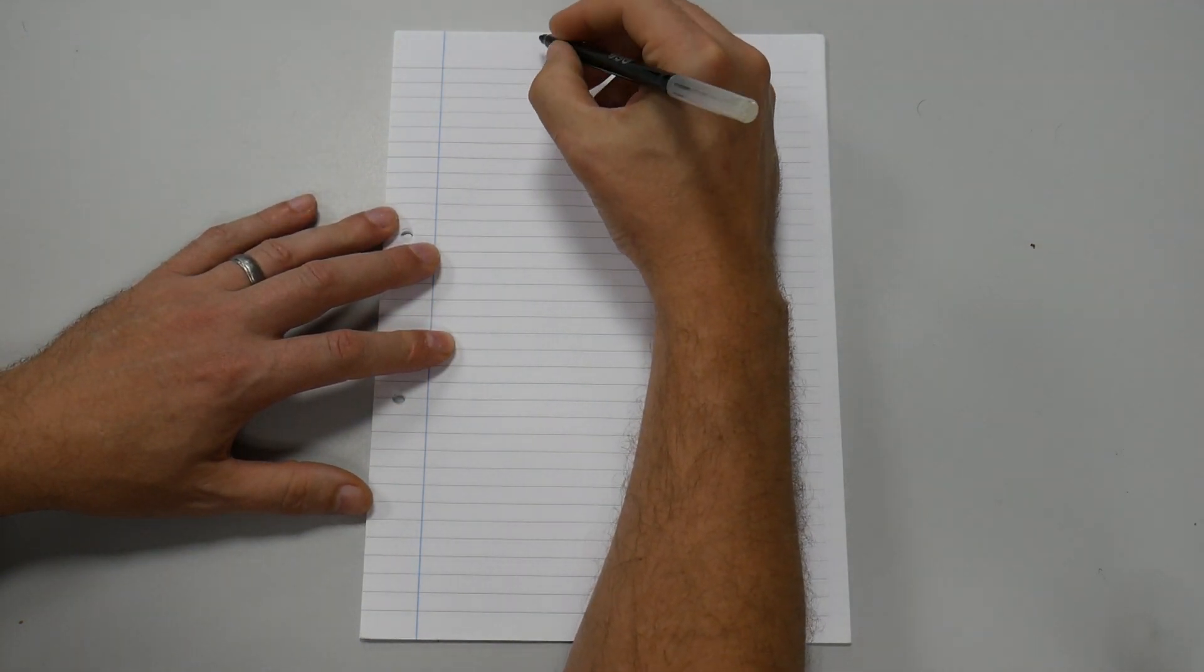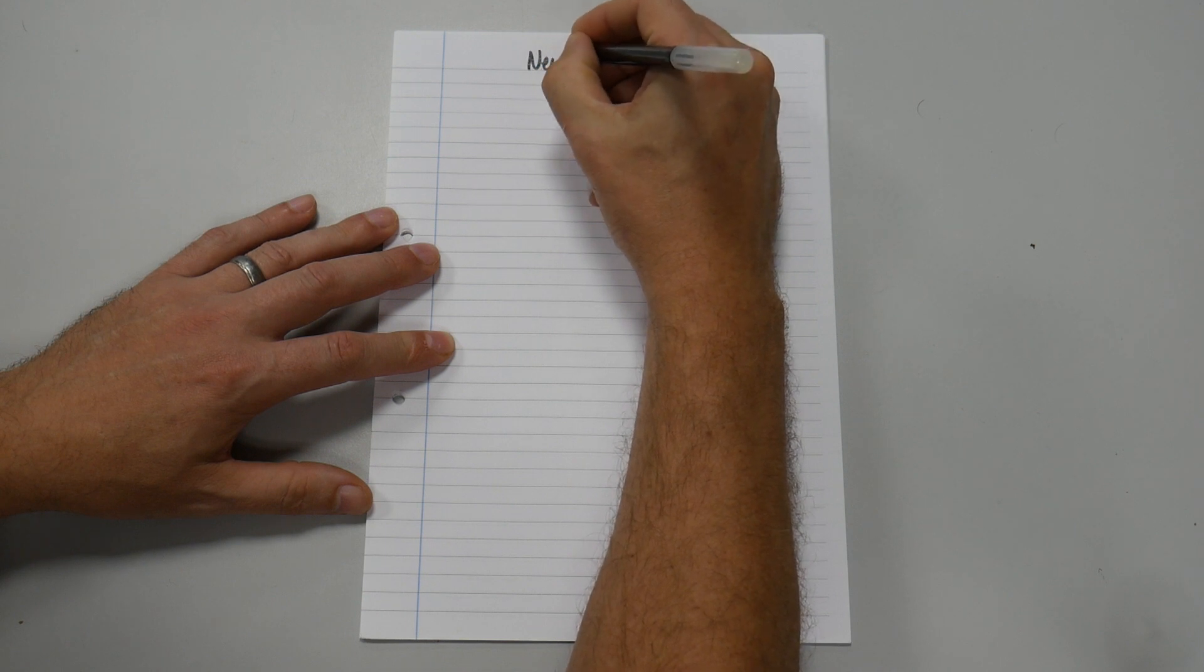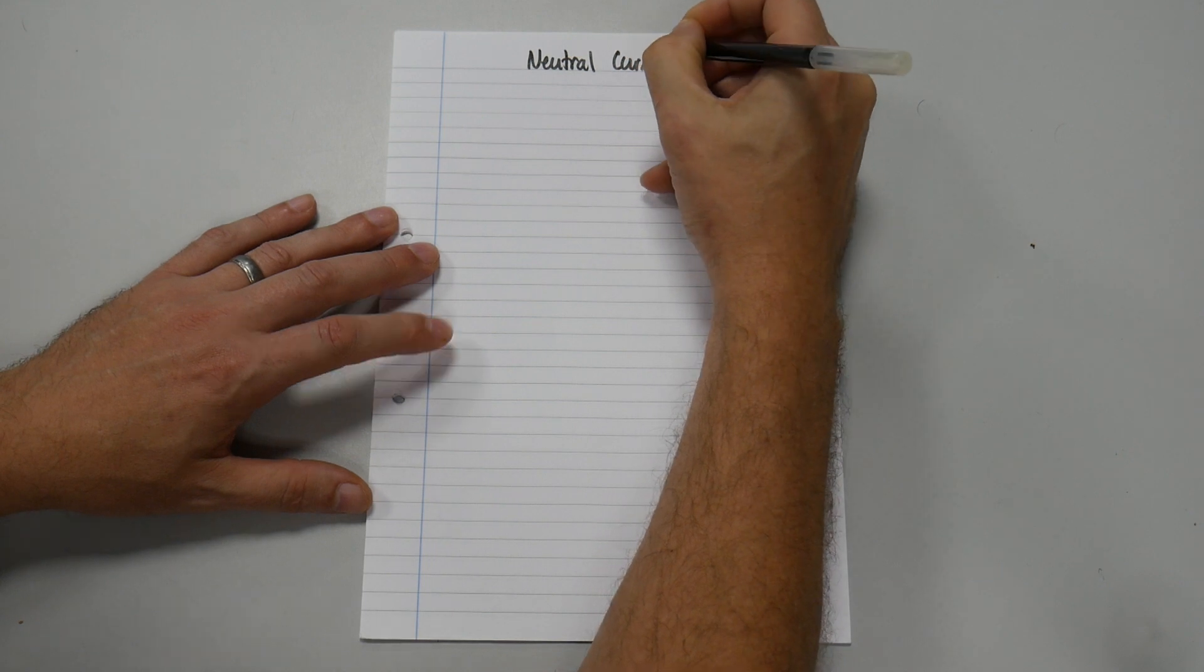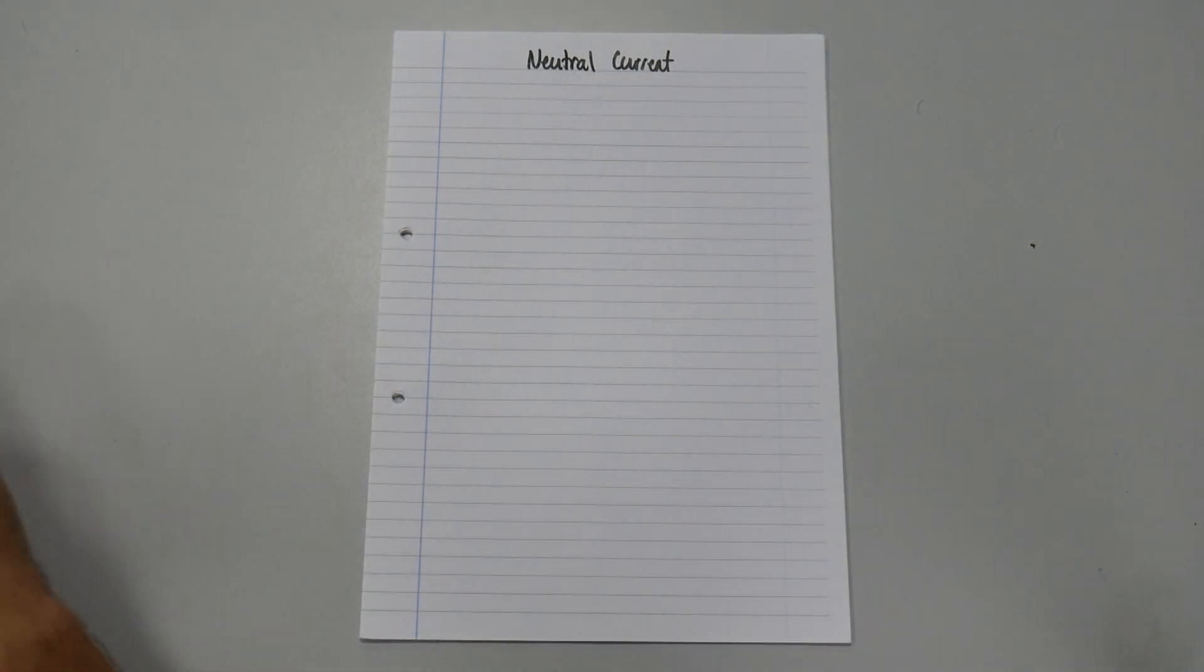So if we write down the title, we'll just call it Neutral Current. And I'll change my pen.